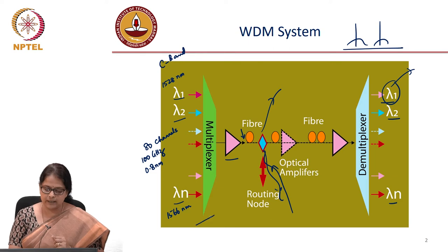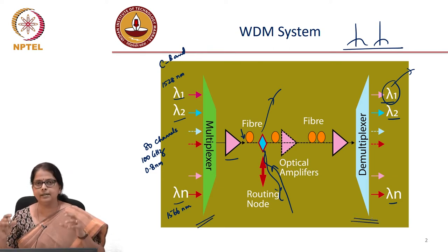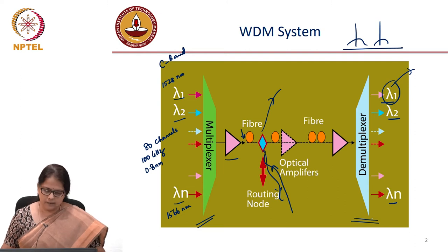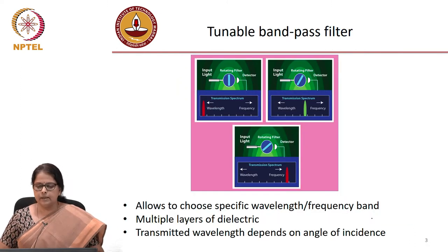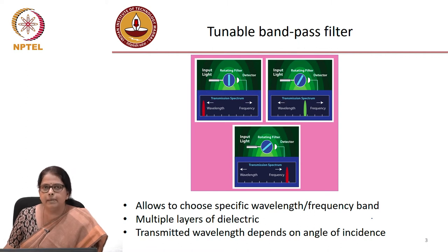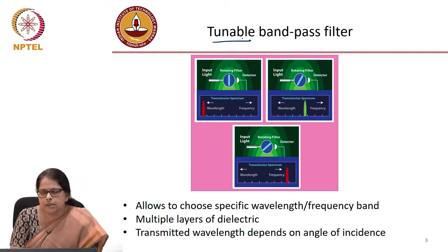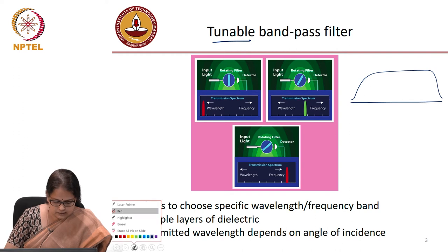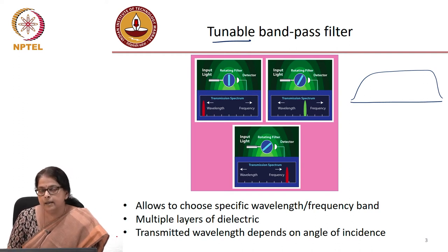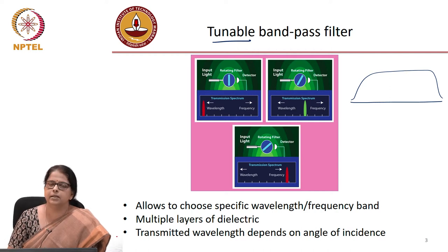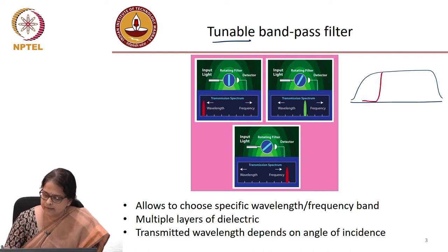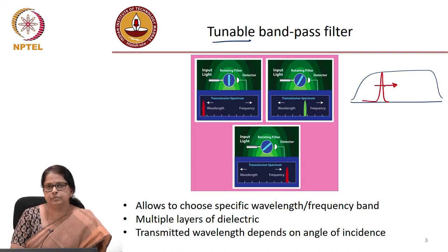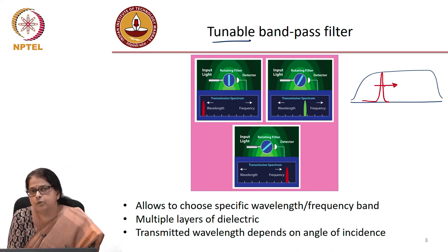So how do you basically devise a wavelength control device? One possibility is a tunable bandpass filter. As the name indicates, the pass band of this filter can be tuned — in your C-band, you can use this filter. It can be electrically controlled or manually controlled such that the center wavelength of the filter is tunable. You can tune it anywhere in the range of wavelengths you want to use.